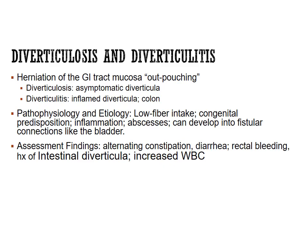Diverticulosis is the herniation of the GI tract mucosa, which creates pockets or outpouching, and is asymptomatic. You don't know you have it unless you have a colonoscopy and see it on the scope. Diverticulitis is when it becomes inflamed, and it occurs mainly in the colon.